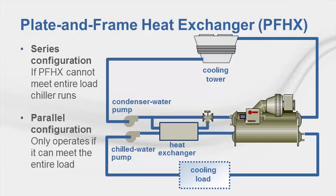This slide shows a simplified depiction of a series-connected heat exchanger. When the heat exchanger is configured in series with the chiller, TRACE first tries to have the heat exchanger meet the entire load. If it can't, the chiller handles the remaining load, also known as integrated operation. When piped in parallel, TRACE 700 assumes non-simultaneous operation — condenser water is routed to either the chiller or the heat exchanger with no mixing. An advantage of a parallel configuration is that the chiller can be isolated for seasonal cleaning and maintenance.